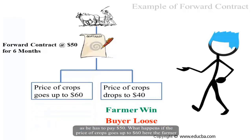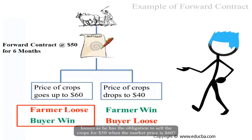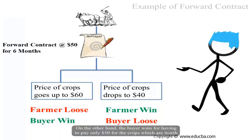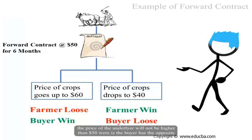What happens if the price of crops goes up to $60? The farmer loses, as he has the obligation to sell the crop for $50 when the market price is $60. On the other hand, the buyer wins, having to pay only $50 for crops worth $60. You can see that a forward contract is essentially a bet — the farmer bets the price will not be higher than $50, whereas the buyer has the opposite view.